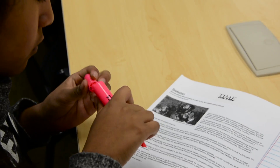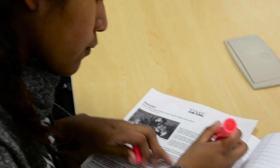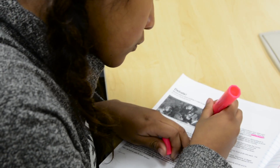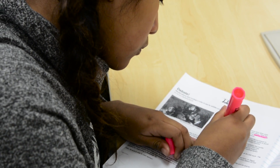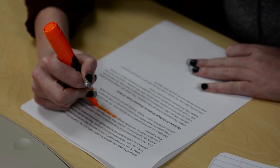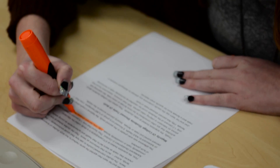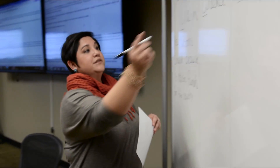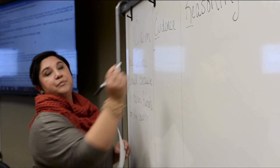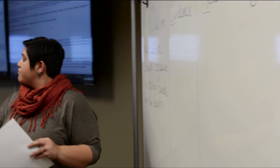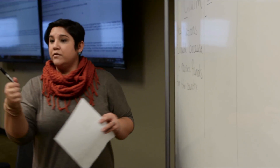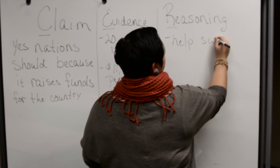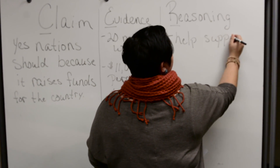I like to find nonfiction articles about current events, and we sit down with that article and they use highlighters to highlight the claim, the evidence, and the reasoning. Then we actually start evaluating an argument — we look at the author's claim, evidence, and reasoning to decipher whether or not it's a strong argument.